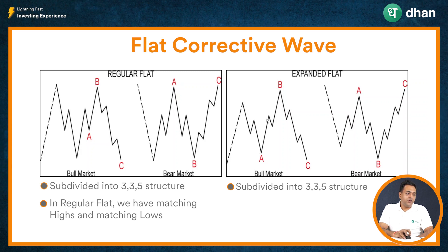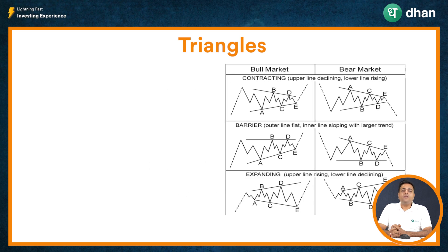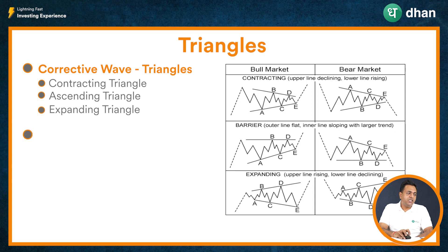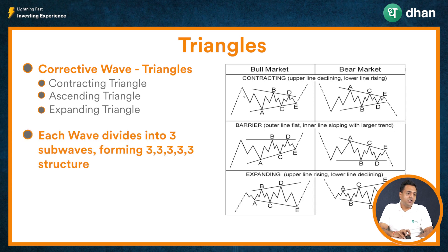The expanded flat subdivides as: 1-2-3 for wave A, 1-2-3 for wave B, and 1-2-3-4-5 for wave C. Finally, talking about the third form of corrective wave — triangles — we can have various sub-forms. Triangles can be contracting triangles, ascending triangles, or expanding triangles. Each wave will typically divide into a 3-3-3-3-3 formation. Visualizing this: 1-2-3 for wave A, 1-2-3 for wave B, 1-2-3 for wave C, 1-2-3 for wave D, and 1-2-3 for wave E.